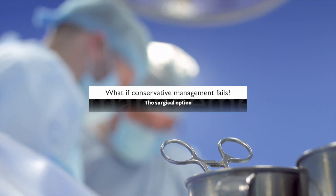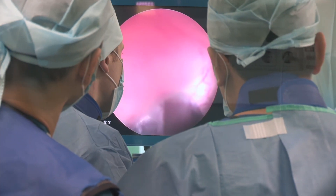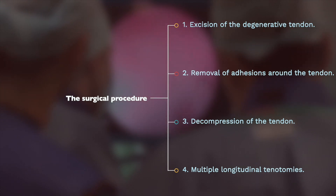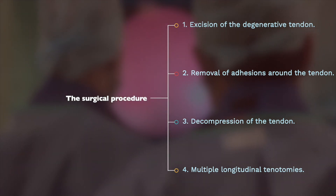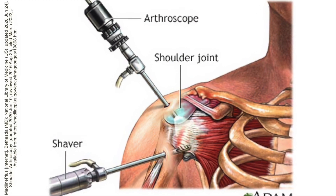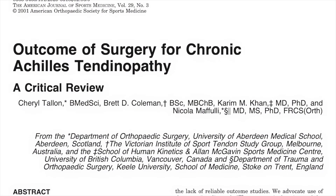If a conservative management strategy fails, the next step is often a surgical consultation. Surgical procedures for tendinopathy involve excision of the degenerative tendon, removal of adhesions, decompression of the tendon, and multiple longitudinal tenotomies. Surgical procedures have advanced from open techniques to minimally invasive approaches using arthroscopy or percutaneous incisions under image guidance. It is reasonable to consider surgical consultation if the patient experiences no improvement after six to twelve months of diligently following a well-designed tendon loading program in combination with adjunctive medical treatments and when other conditions have been excluded or managed.